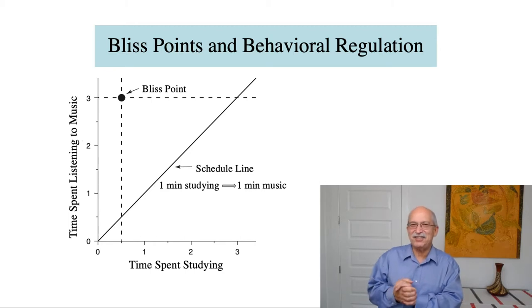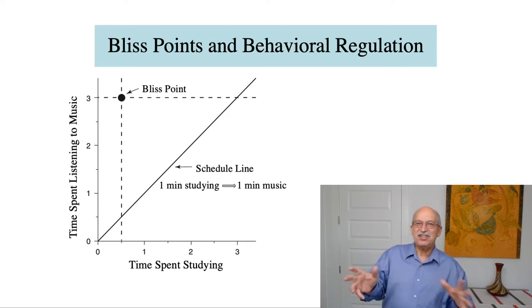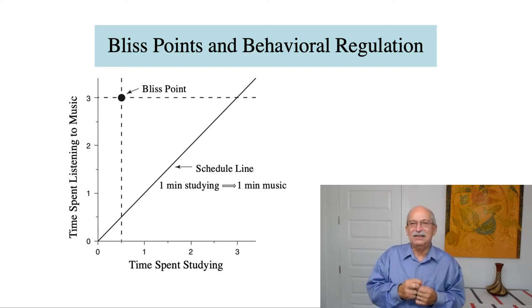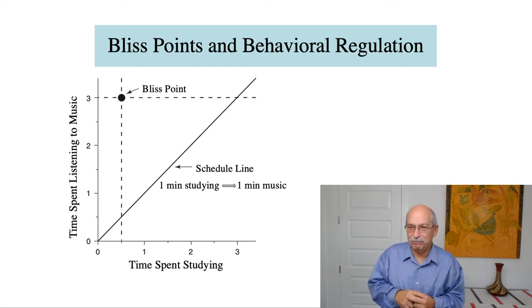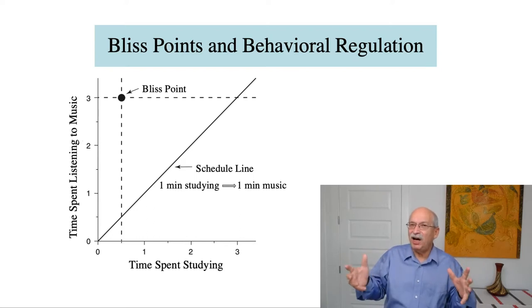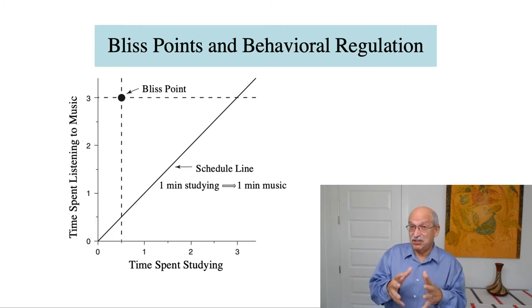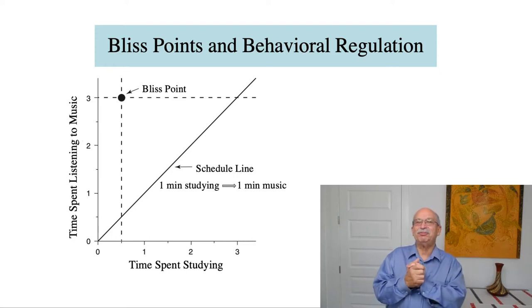Now we want the teenager to spend more time studying. So we set up an instrumental conditioning procedure that links these two behaviors such that she has to spend a minute studying for every minute that she gets to spend listening to music. How is the teenager going to respond to this schedule constraint? All instrumental conditioning procedures constrain or limit the freedom of behavior, and then the subject has to readjust and make adjustments to that constraint.